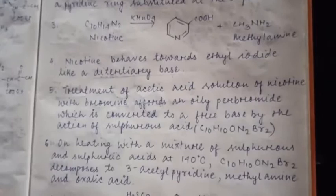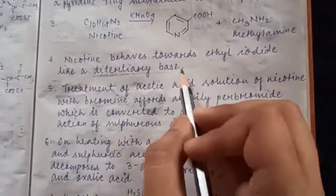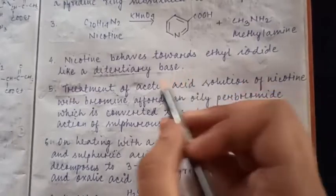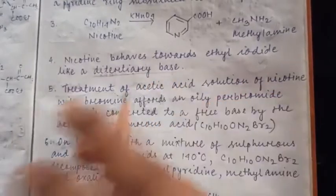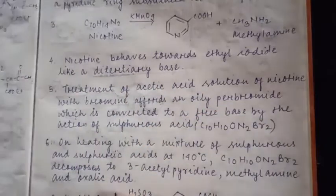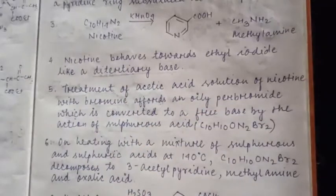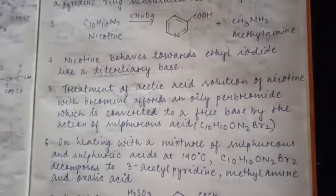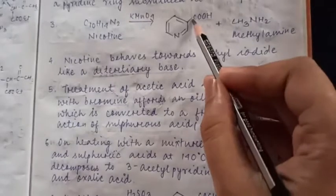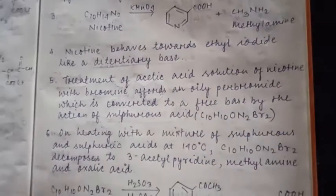Nicotine behaves towards ethyl iodide like a di-tertiary base. Di-tertiary means at least 2 nitrogens obviously. That's why it is behaving as di-tertiary base. So nicotine's structure may have 2 nitrogens. So up till now we have learned that nicotine's structure will have one pyridine ring, and that pyridine ring is substituted at 3 position, and at least 2 nitrogens may be present.